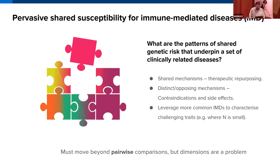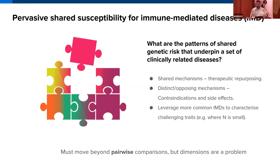We want to move beyond pairwise comparisons and look at many diseases simultaneously to identify shared mechanisms that can help in therapeutic repurposing, contraindications, and side effects, and to leverage information from more common IMDs to characterize rare traits that lack sufficient sample size for discovery on their own. But with thousands of genetic variants and many traits, you quickly run into trouble with high dimensionality — and that's the issue this work addresses.